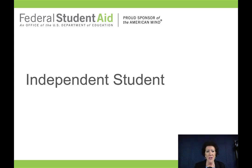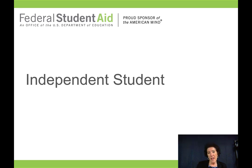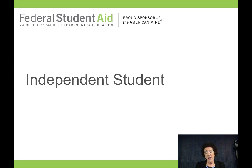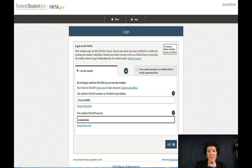Let's talk about the independent student. If you are a dependent student — meaning your parents pay for at least half of your support, you live with them, you're under 23, you're not married, you don't have a child, and you're not part of the foster care system — then you are considered dependent. If you have enlisted in the military, are 23 and up, are married, have a child, or your parents don't claim you, then you will be considered an independent student.